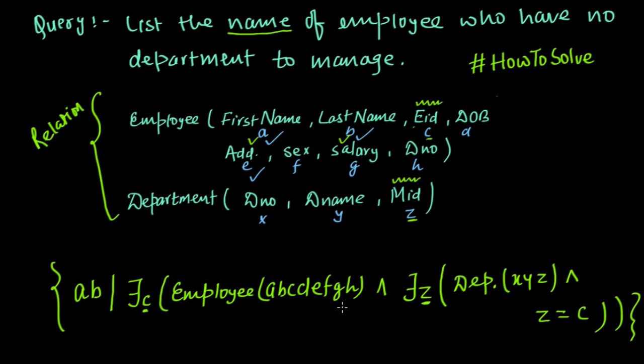But it is not correct. If you notice what I am comparing here is this z is equal to c. So it directly means that what I have listed down here is the name of employee who manages some department because I am saying z is equal to c.